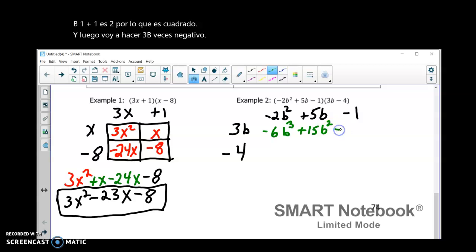And then, I'm going to do 3B times negative 1. Signs are different. So, it's a negative. 3 times 1 is 3. And then, I'm going to bring the B. Negative 4 times negative 1 is a positive 4.